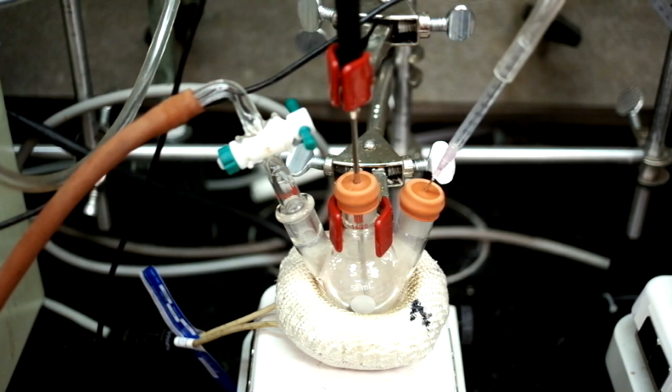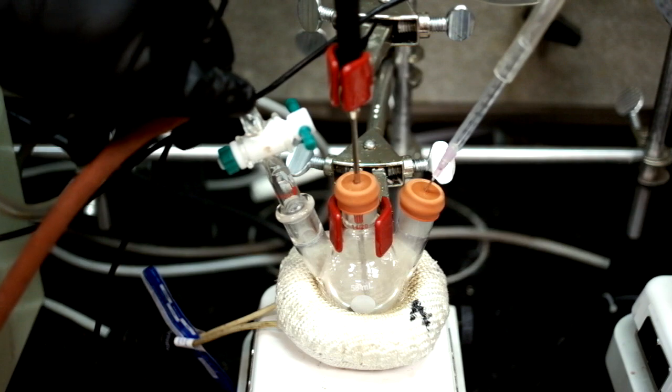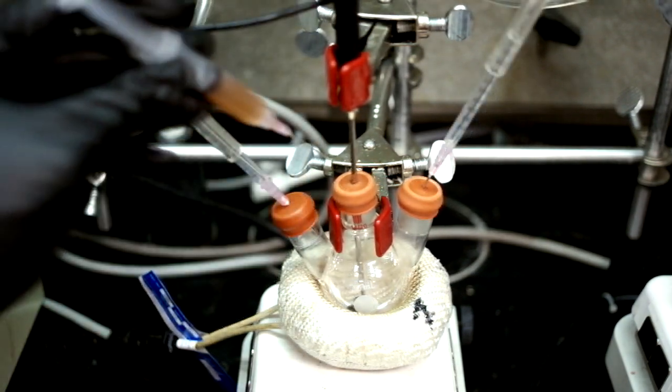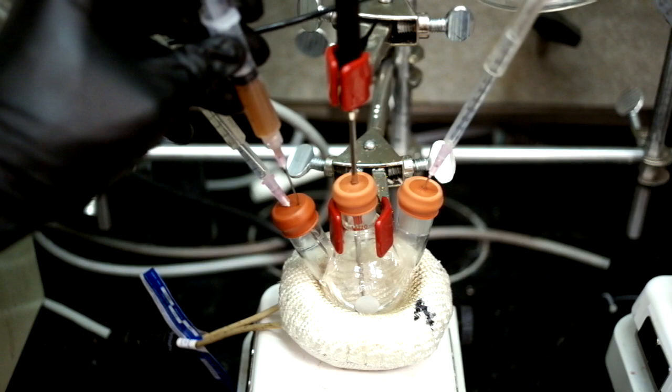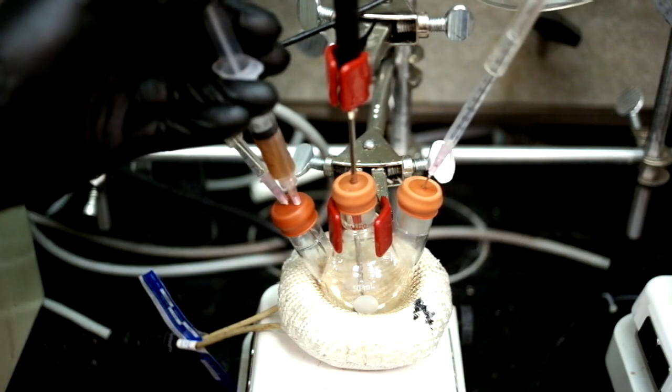After the hour of degassing, the reaction flask will be a clear solution. We can switch it to argon now and add half of the zinc telluride cores from the previous procedure shown in another video.